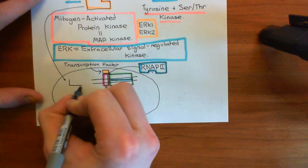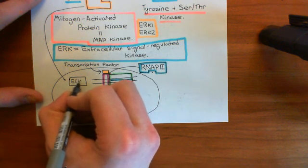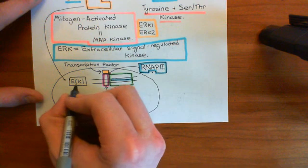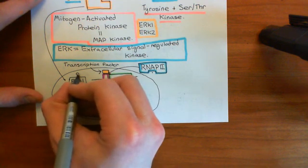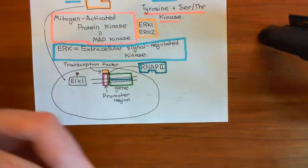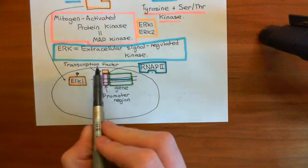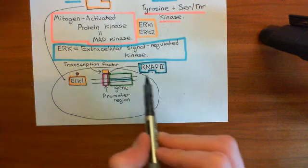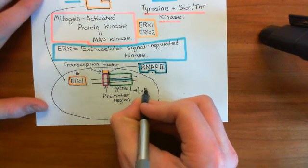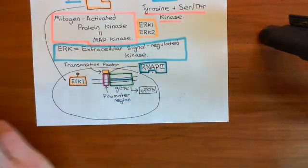ERK will come into the nucleus of the cell. There are two main transcription factors I'm going to talk about it activating. The first is ELK1, which is going to be phosphorylated by ERK enzymes. With the phosphate group added on, ELK1 is now an active transcription factor and is going to change gene expression. One of the key genes that ELK1 upregulates is a protein called C-fos, resulting in increased production of C-fos protein.